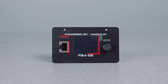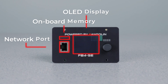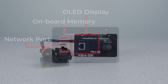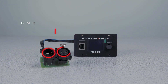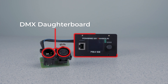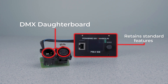FB4 Standard features our FB4 mainboard, a network port, built-in onboard memory, and an OLED display. FB4 DMX retains the same features as Standard, but is included with a DMX daughter board to allow for DMX in and out.